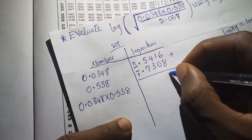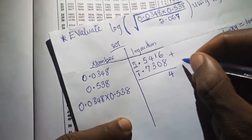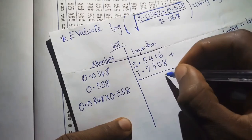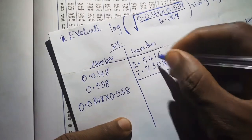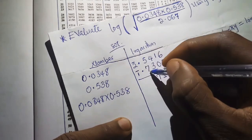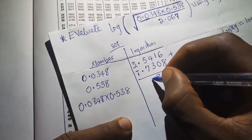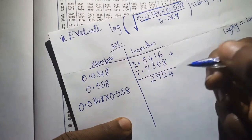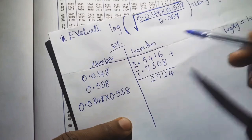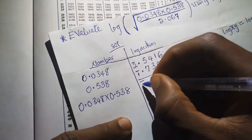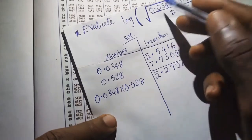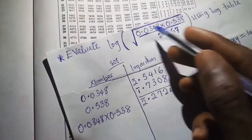Adding the two logarithms: in the mantissa, 6 plus 8 is 14 — write 4, carry 1. 1 plus 0 plus 1 gives 2. 4 plus 3 is 7. 5 plus 7 is 12 — write 2, carry 1. For the characteristics: negative 2 plus negative 1 is negative 3, plus the carried 1 gives negative 2, written as bar 2. The combined log of the numerator is bar 2.2724.